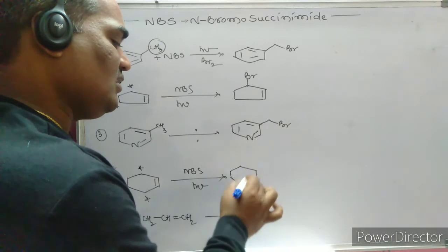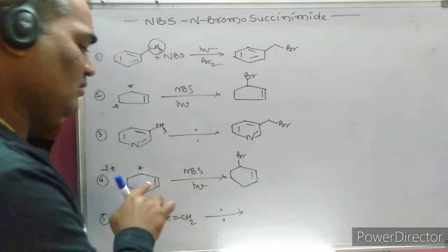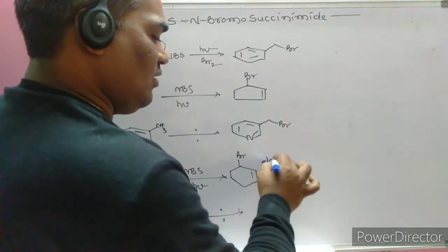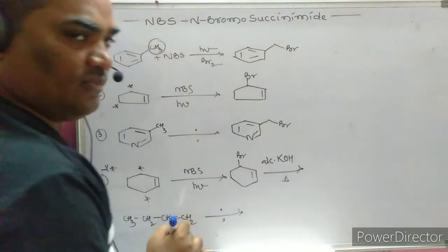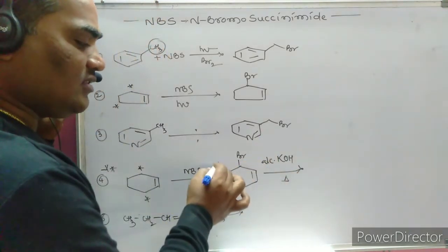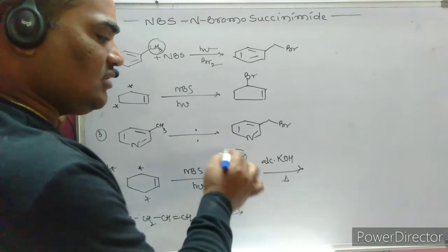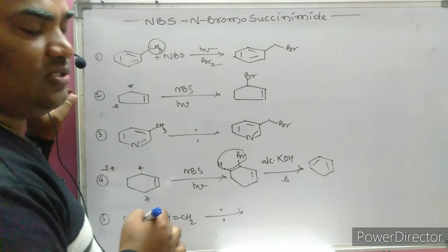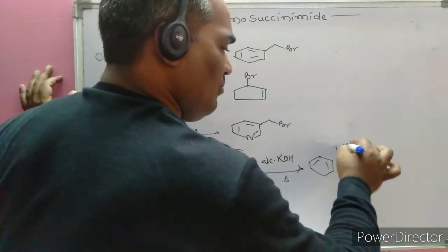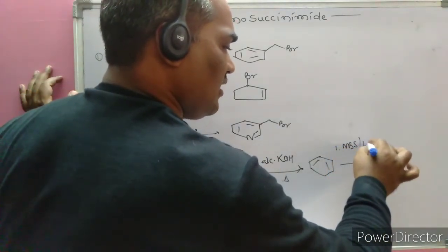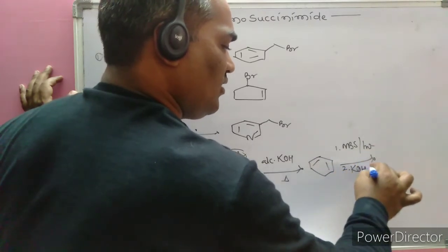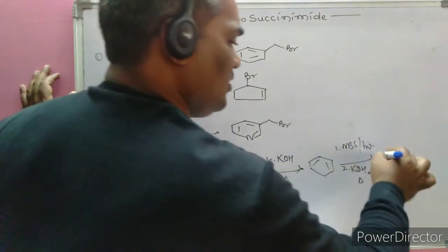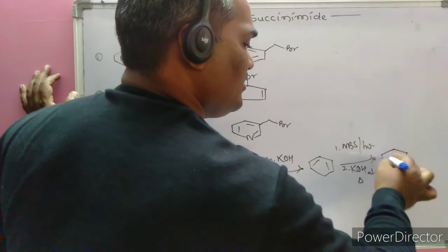If the compound is then treated with alcoholic KOH solution followed by heating, dehydrohalogenation occurs — loss of HBr — and as a result of this elimination, a double bond is re-established. So step one is NBS with sunlight, step two is alcoholic KOH with heating, resulting in one more bromine substitution and formation of the aromatic compound benzene.